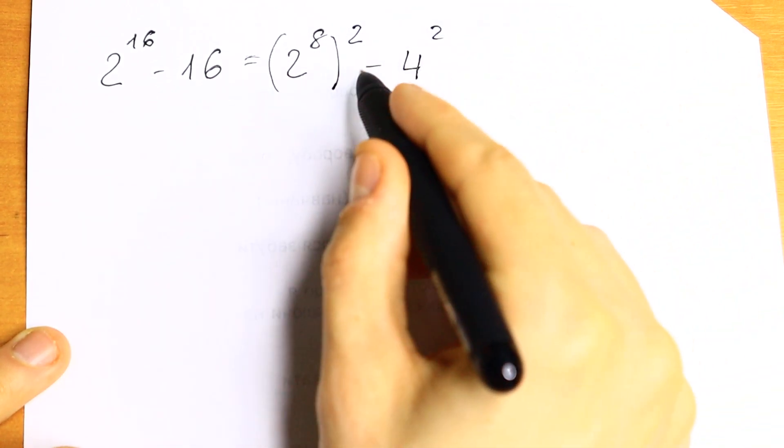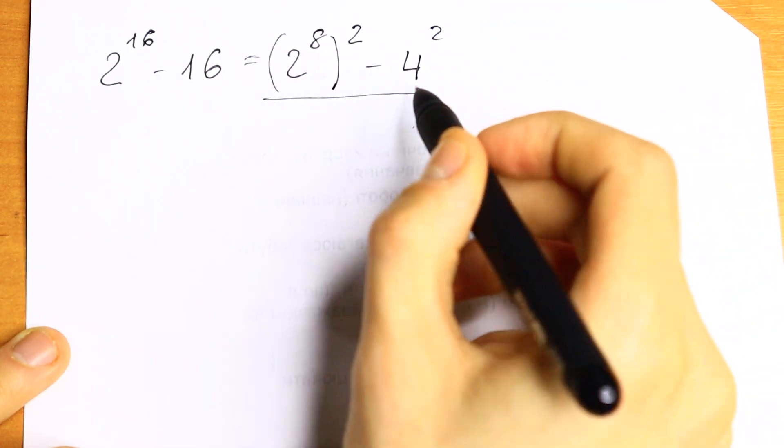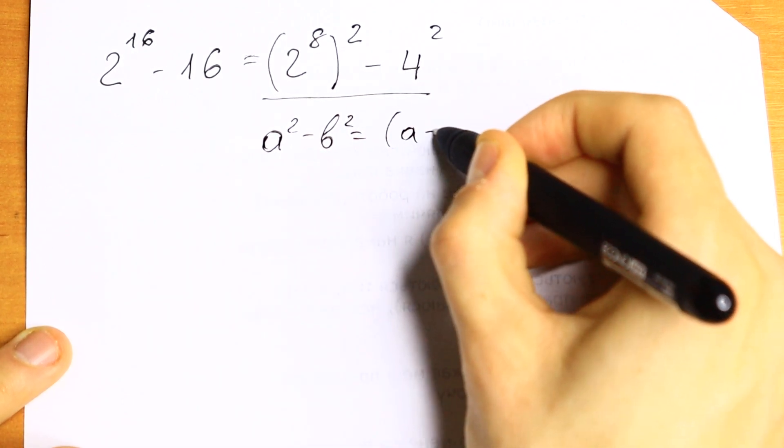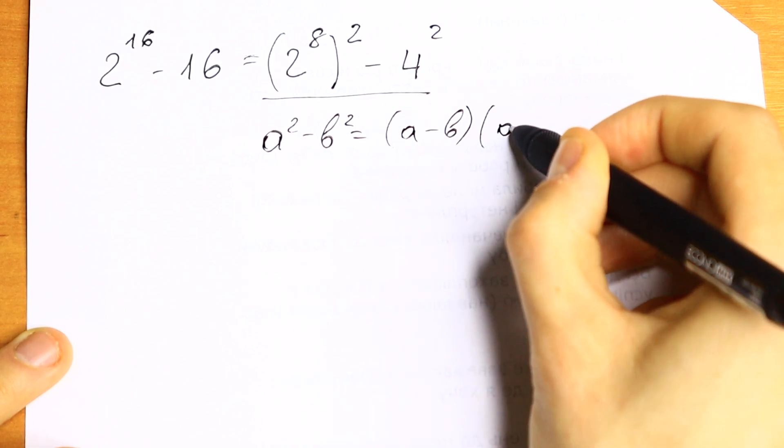If we know the formula a squared minus b squared, it will be equal to a minus b times a plus b.